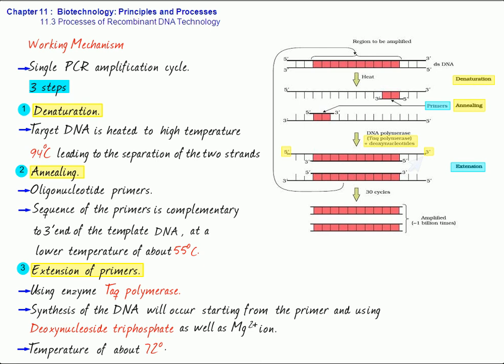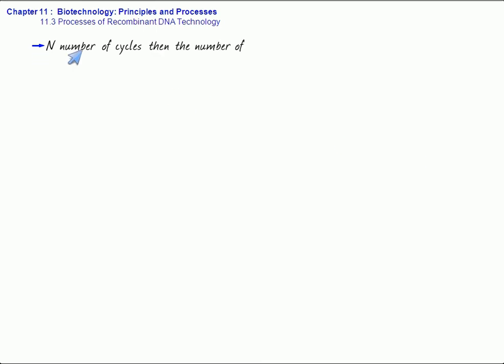Hence, if we have n number of cycles, then the number of DNA molecules obtained will be 2 to the power of n. So, the PCR is more effective than gene cloning.